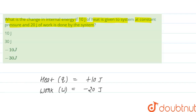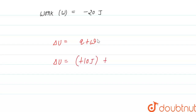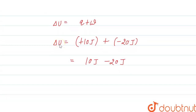We have to calculate the change in internal energy. According to the first law of thermodynamics, the change in internal energy delta U equals q plus w, where q is the heat and w is the work done. So delta U = +10 joules + (-20 joules) = 10 joules - 20 joules.